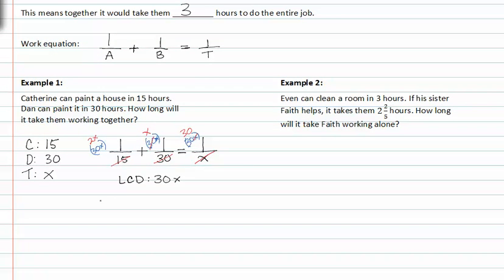Rewriting the equation, we get two x plus x equals thirty. So three x is equal to thirty, so x is equal to ten. So together they can do the job in ten hours.